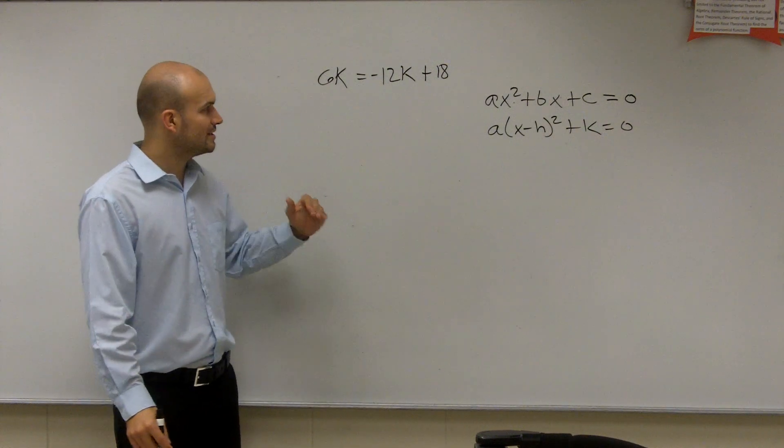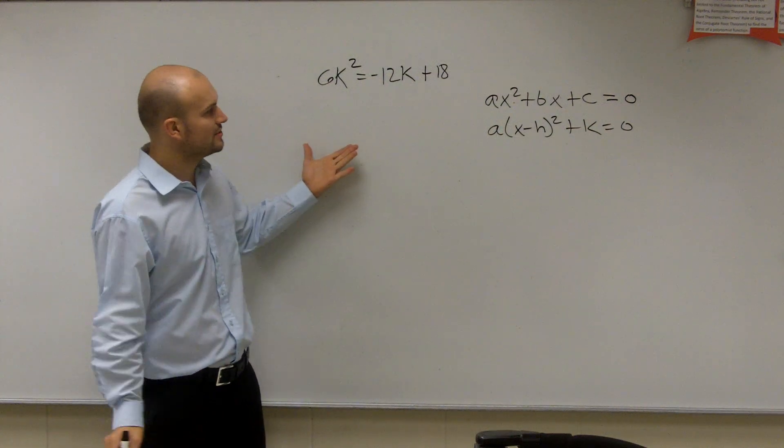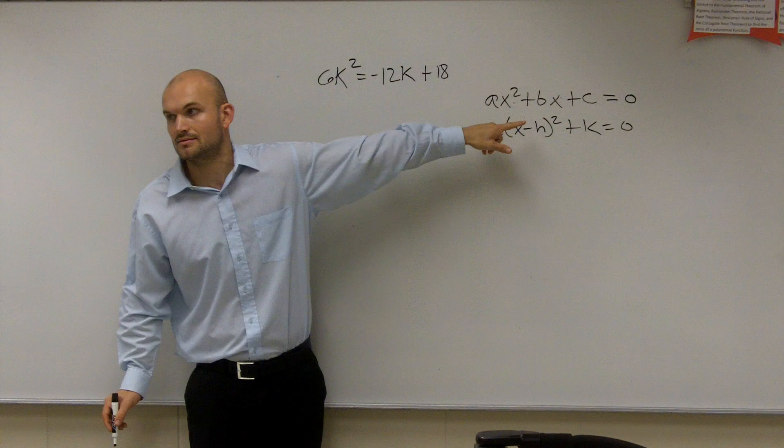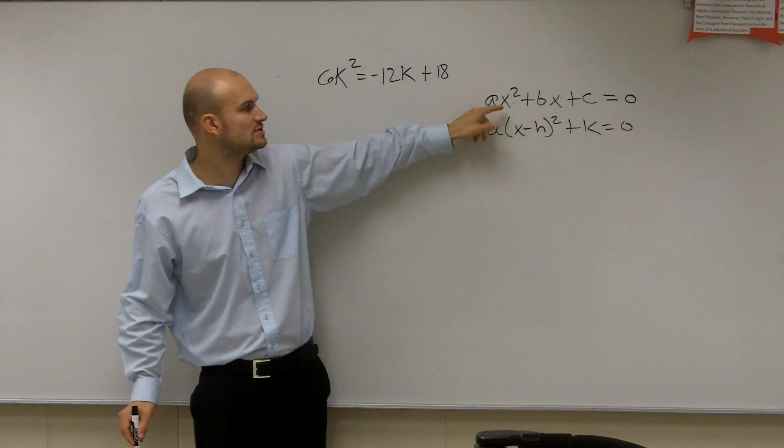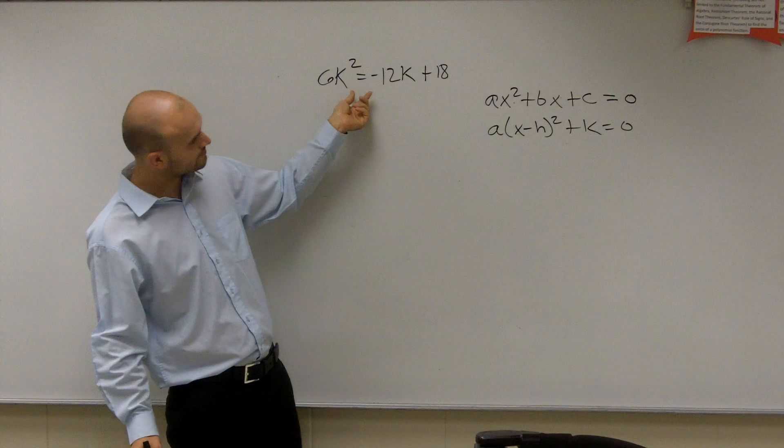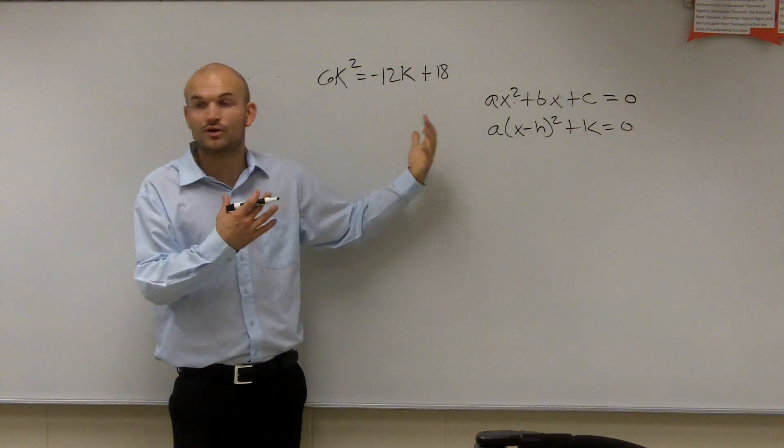Before I do completing the square, though, that's squared, right? Before I do that, though, I want to make this look like that. I don't want to get confused on what actually these numbers are. I want to make sure they're all on the same side.